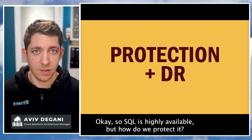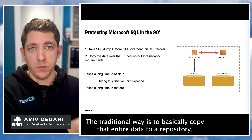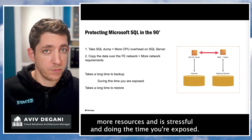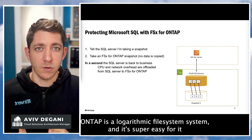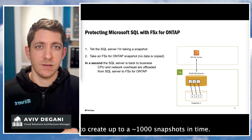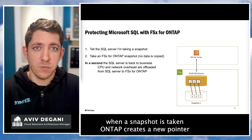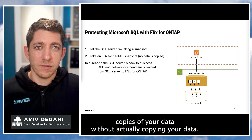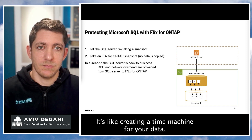So SQL is highly available, but how do we protect it? The traditional way is to copy the entire data to a repository, which requires more resources, is stressful, and during that time you are exposed with less-than-ideal recovery. But there is a better way. ONTAP is a logarithmic file system and it's super easy to create up to a thousand point-in-time snapshots. When a snapshot is taken, it creates a new pointer that refers to the old location, so you can create up to a thousand copies of your data without actually copying it.